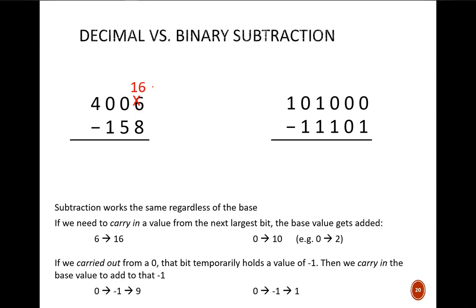That 10 came from borrowing a 1 from the next column, so we subtract a 1 from the original zero. Temporarily, negative 1 is sitting in this column. We need to borrow a 10 from the next column, so negative 1 plus 10 leaves 9 in this column. That same process is repeated with the next zero. We borrowed from it, so it becomes a negative 1 temporarily, then we add 10 to it to leave 9. And that borrow came from this 4, so it now becomes a 3.